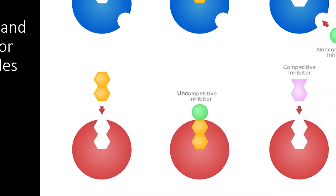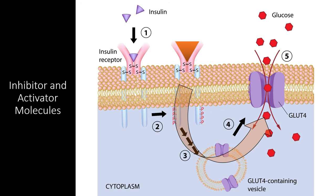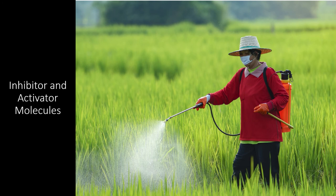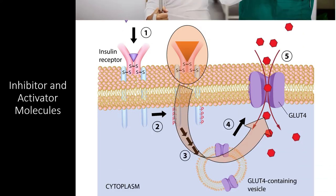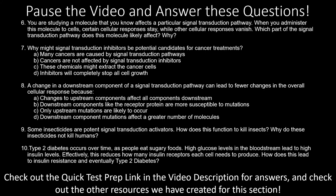Inhibitors specific to different enzymes within a signal transduction pathway can drastically change the cellular response that gets initiated. Likewise, activators are molecules that can bind either reversibly or irreversibly to receptor proteins, activating a pathway that would otherwise not become activated. For example, many insecticides are potent activators of signal transduction pathways in neurons, which leads to hyperactivity in insect brains and eventually to death. Alternatively, signal transduction inhibitors are being studied for the treatment of cancers, since cancer is often caused by a faulty signal transduction pathway.